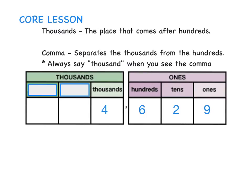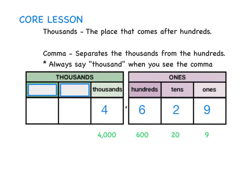Now we're going to be learning about the thousands place. The thousands come after the hundreds. As you can see, the comma separates the thousands from the hundreds. Always say the word thousand when you see the comma. In this number, the digit 4 is in the thousands place. Its value is 4,000.